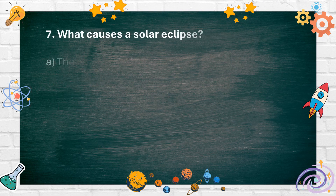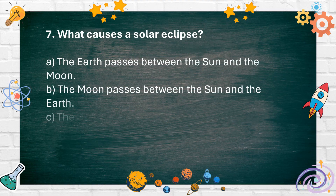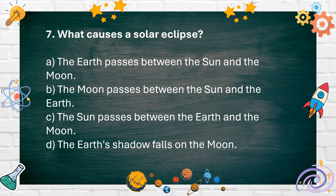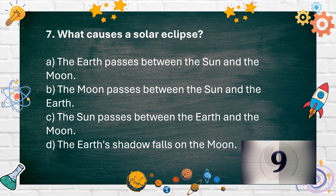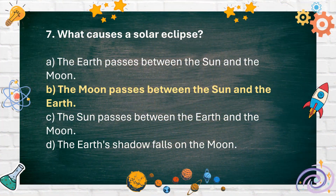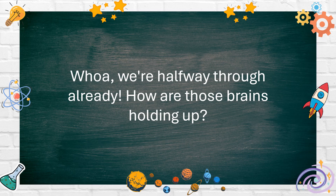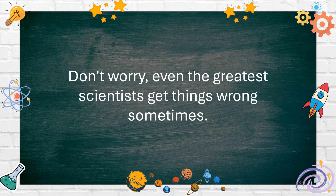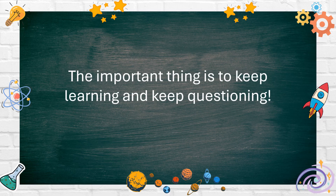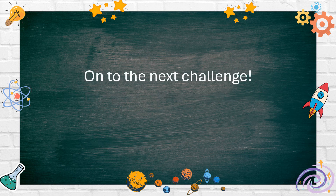Number 7. What causes a solar eclipse? A. The Earth passes between the Sun and the Moon, B. The Moon passes between the Sun and the Earth, C. The Sun passes between the Earth and the Moon, D. The Earth's shadow falls on the Moon. The answer is B. The Moon passes between the Sun and the Earth. The important thing is to keep learning and keep questioning. On to the next challenge!